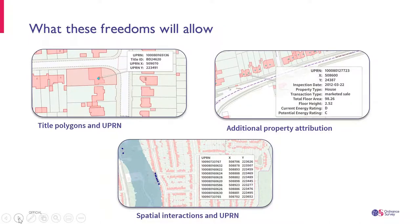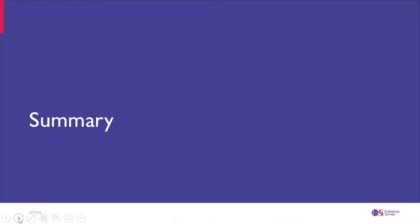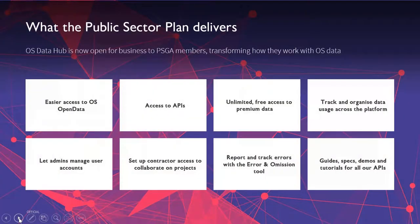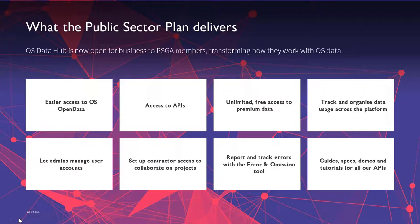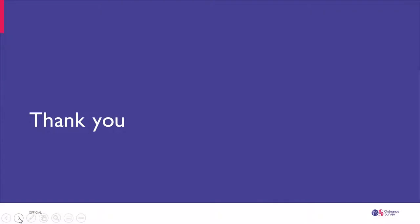In summary, what does the public sector plan deliver? Much easier access to data, access to APIs for the first time, unlimited free access to premium data you'd have paid for previously, the ability to track and organize data across the platform, manage user accounts, set up contractor access, report and track errors with the forthcoming error and omission tool, and access guides and tutorials for all systems and products. That's a real whistle-stop tour — thank you very much, I'll hand back to Ian.